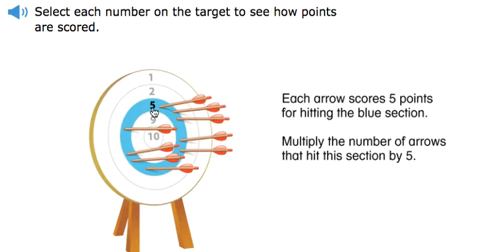Each arrow scores five points for hitting the blue section. Multiply the number of arrows that hit this section by five.